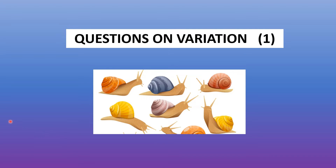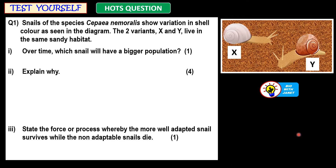Let's look at some hot questions on variation. Snails of the species Cepia nemoralis show variation in shell colour as seen in the diagram. The two variants X and Y live in the same sandy habitat.